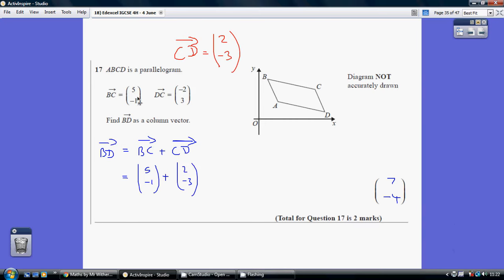We want to find the vector B to D. One way of getting from B to D is to go from B to C and then from C to D. B to C is obviously easy - that's 5 along and minus 1 down.